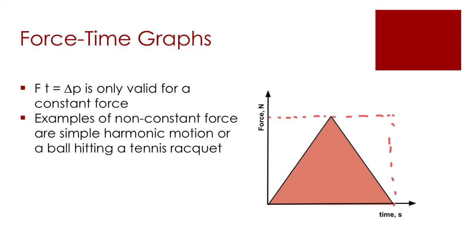The examples I have here are simple harmonic motion or a ball hitting a tennis racket. Now they wouldn't necessarily be a nice little triangle like this. But I've just simplified it so I could calculate the area a little easier.